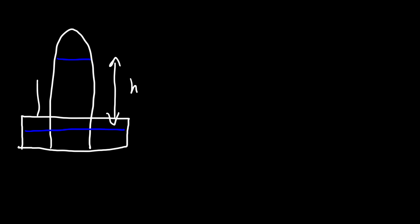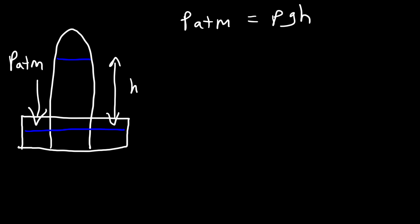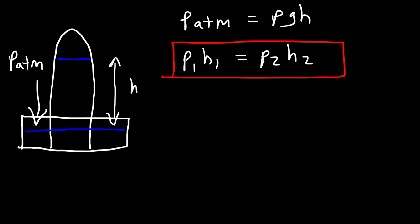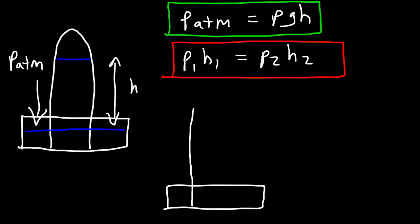For a quick summary: if you have one fluid in a barometer, the atmospheric pressure equals the density of the fluid times g times the height of the fluid. If you replace that fluid with another fluid, use the equation: rho_1 times H_1 equals rho_2 times H_2, where g cancels out. Those are the first two equations used in this video.